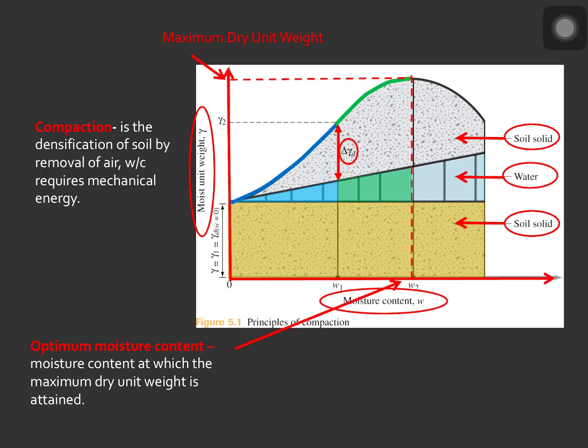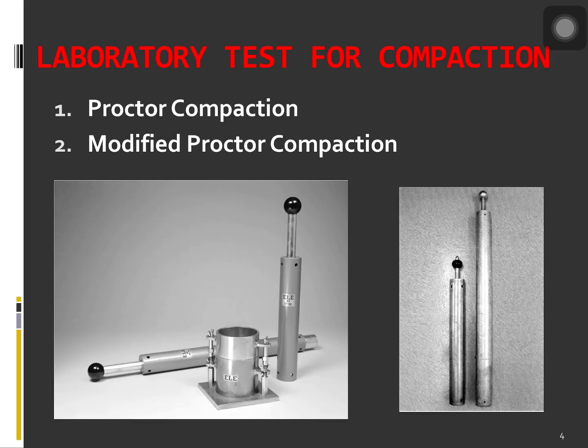Beyond the optimum moisture content, any increase in the moisture content tends to reduce the dry unit weight. This is because the water takes up the spaces that would have been occupied by the solid particles. The laboratory test generally used to obtain the maximum dry unit weight of compaction and optimum moisture content is called the proctor compaction test and the modified proctor compaction, as you can see here in our figure.